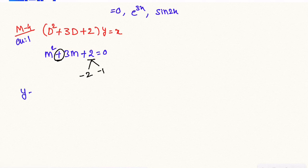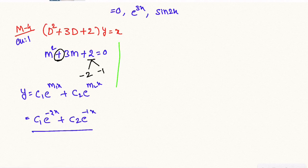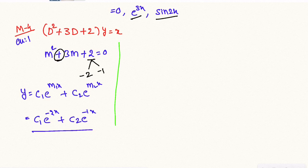So this equation's complementary function is equal to c1·e^(m1·x) + c2·e^(m2·x). Substituting the values: c1·e^(-2x) + c2·e^(-x). Now, the particular integral for the x term: D² + 3D + 2 applied to x.